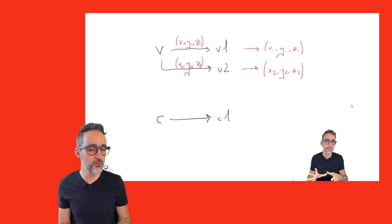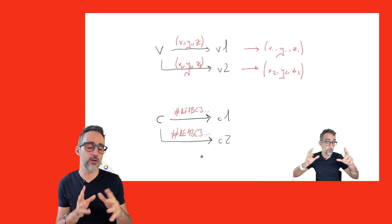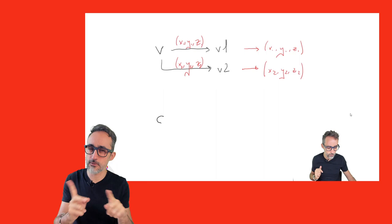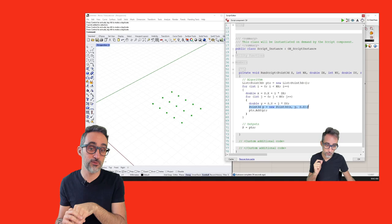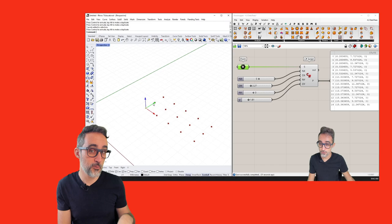I will also use some of this time to review important and fundamental programming concepts that will help us understand how to improve our algorithms and why certain things work the way they do. For example, the differences between structs and classes, or how to actually work with data trees — not using standard Grasshopper tools, but using data trees inside of scripting environments, which is slightly different from how it's done in vanilla Grasshopper.